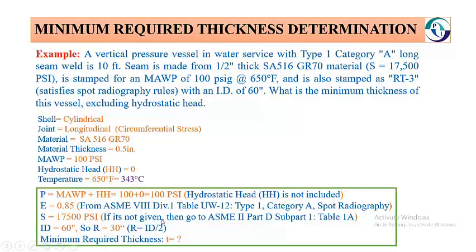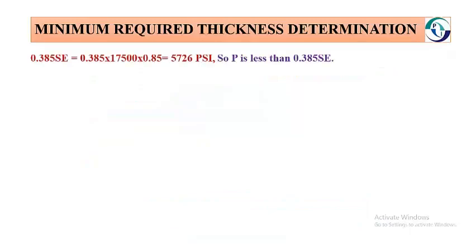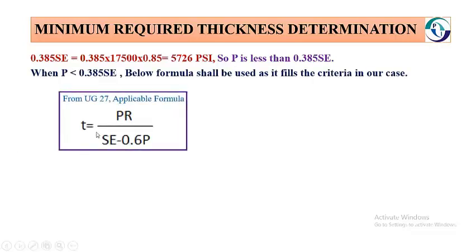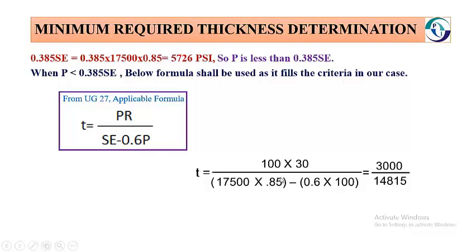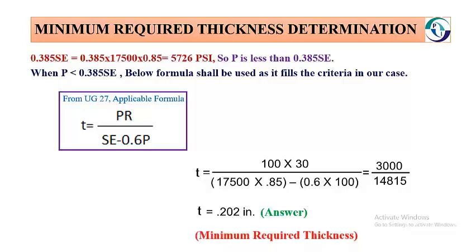Now we calculate the minimum required thickness. To qualify the equation criteria, we plug the values into the condition P less than 0.385SE. We find the value 5,726 PSI, which is less than that threshold, so the equation criteria is fulfilled and we can use the UG-27 formula. Plugging the values into the equation gives a minimum required thickness of 0.202 inches. This is our minimum required thickness, and this equation is used for calculating the minimum required thickness for the cylindrical shell.